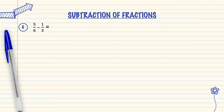Question number 6: 5 over 6 minus 1 over 3. As we can see, the denominator is different. So we must change the denominator to become the same number, then we subtract.